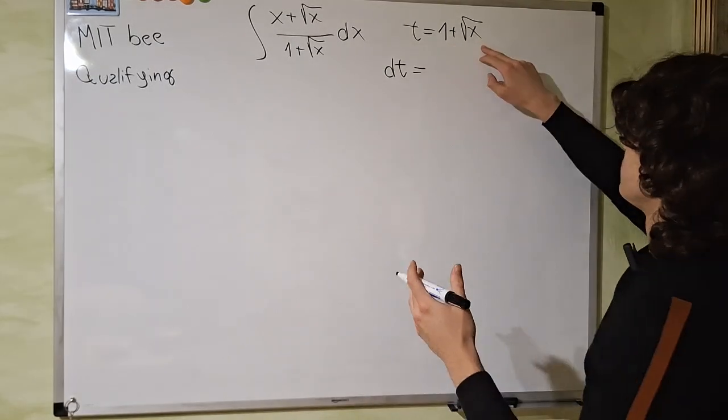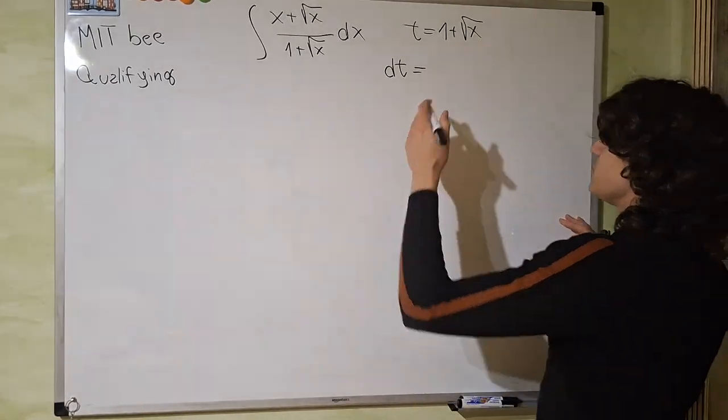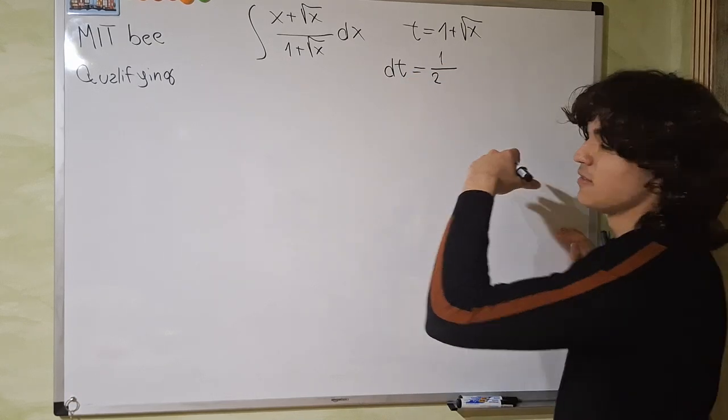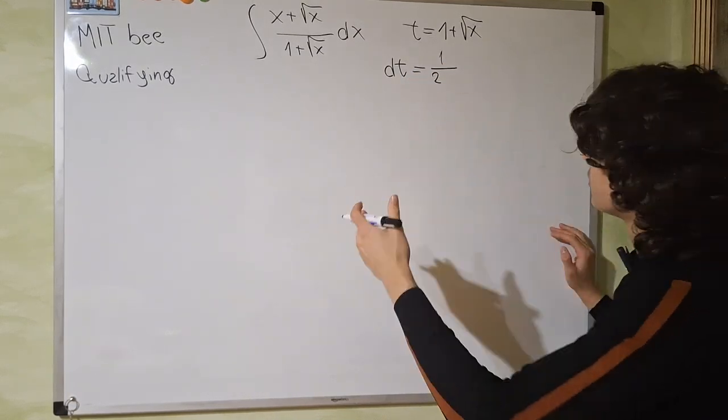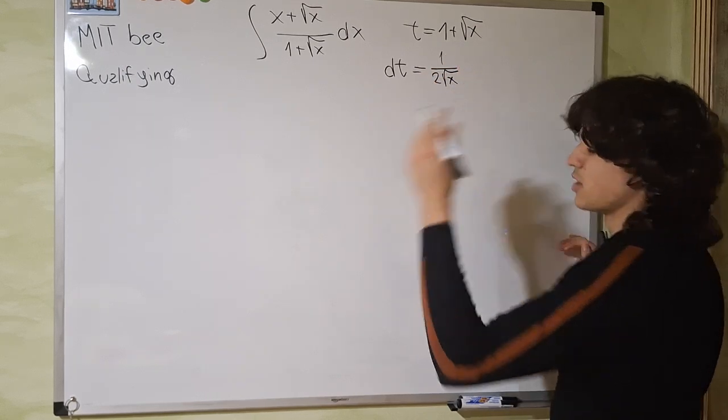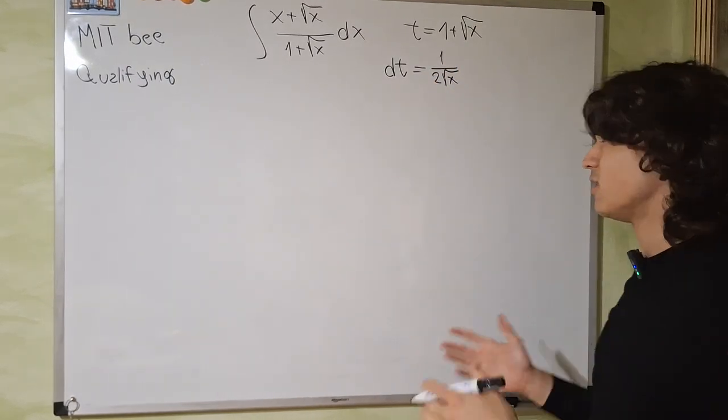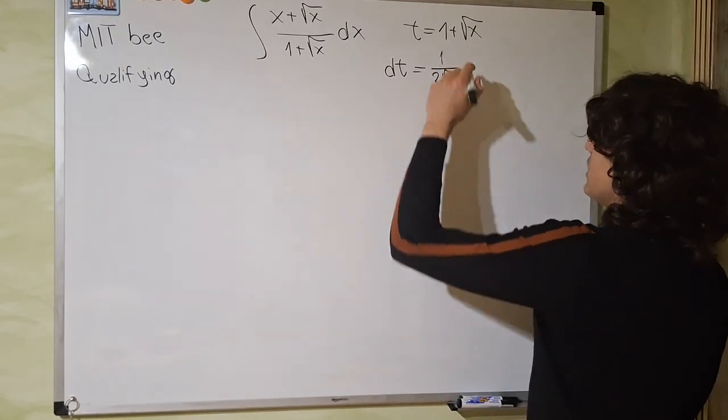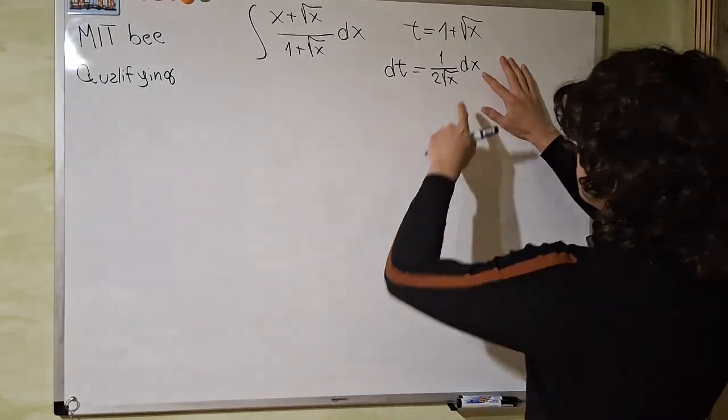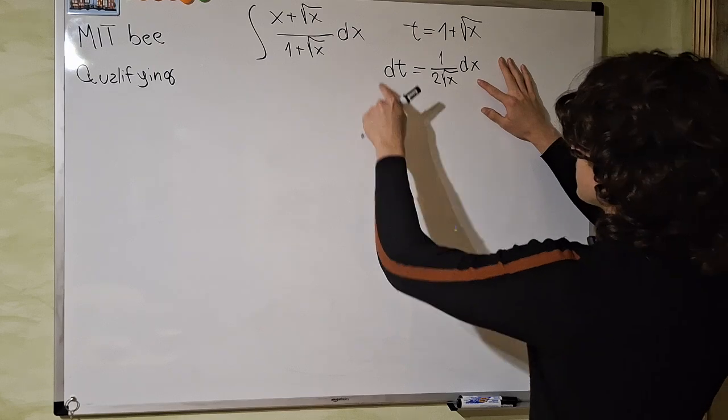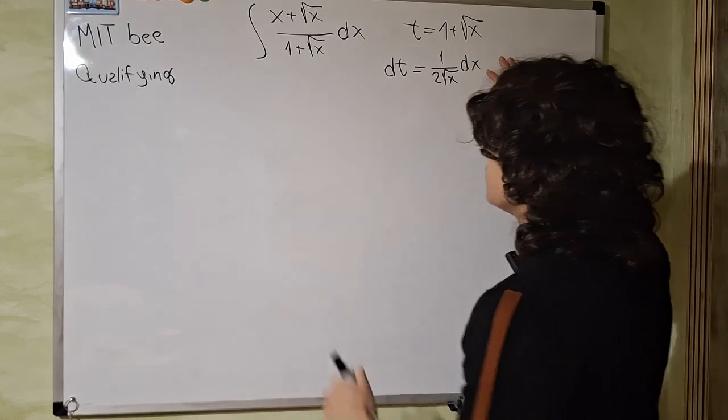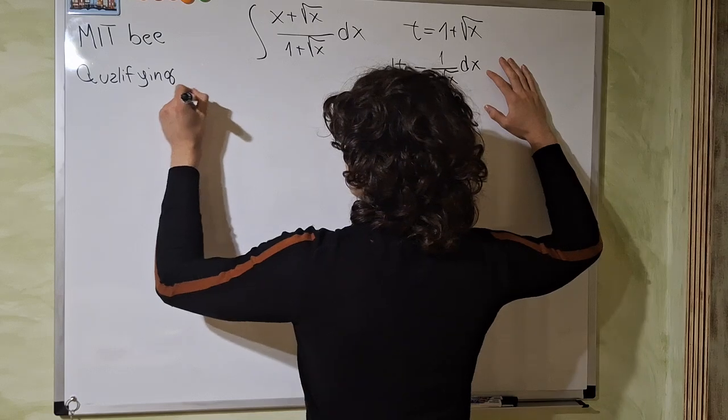Derivative of 1 is 0. Derivative of the square root of x is 1 over 2 times the square root of x because it is 1 half minus 1 is minus 1 half. And don't forget to put the dx here. So if we move 2 times the square root of x to the other side, so we just isolate the dx on one side, we get the following.